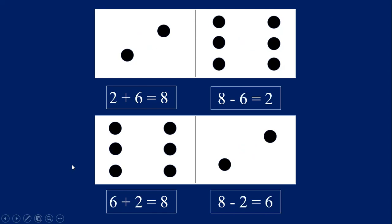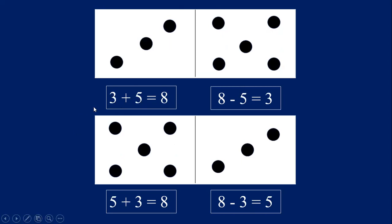Good job! Let's try our next fact family. This one has the numbers two, six, and eight. Let's say our equations. Two plus six equals eight. Eight minus six equals two. Switch the order — six plus two equals eight. Eight minus two equals six. Very good!